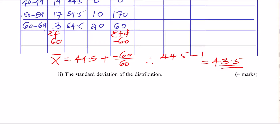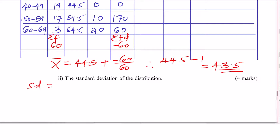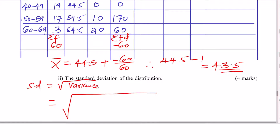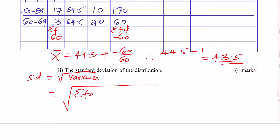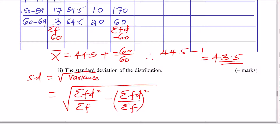Part two: the standard deviation of the distribution. Standard deviation is obtained by getting the square root of the variance. The variance formula for this type of grouped data is: summation of FD² divided by summation of F, subtract the quantity (summation of FD divided by summation of F) squared. Once we get the square root of the variance, we get the standard deviation.